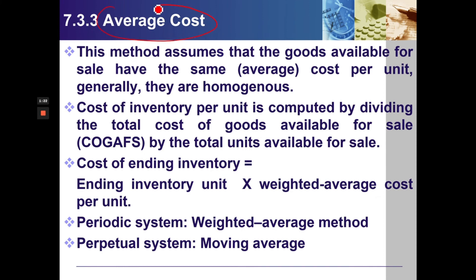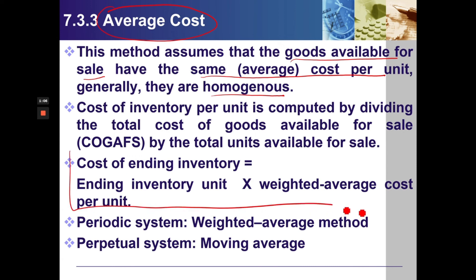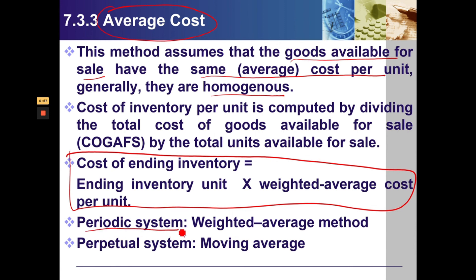Average Cost. This method assumes that the goods available for sale have the same average cost per unit — generally, they are homogeneous. The formula to compute cost of ending inventory is: ending inventory units multiplied by weighted average cost per unit. In a periodic system, it is called the weighted average method. In a perpetual system, it is called the moving average.